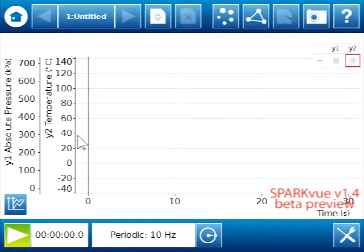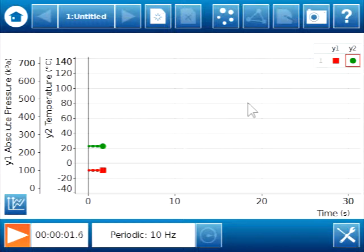And now I have pressure and temperature on the y-axis and time on the x-axis. I'm going to hit Start to get a baseline and understand what's going on. So right now my y1, which is my pressure, is around 100 kilopascals. My y2, which is my temperature in Celsius, is around 20 degrees Celsius, which is what I expect.